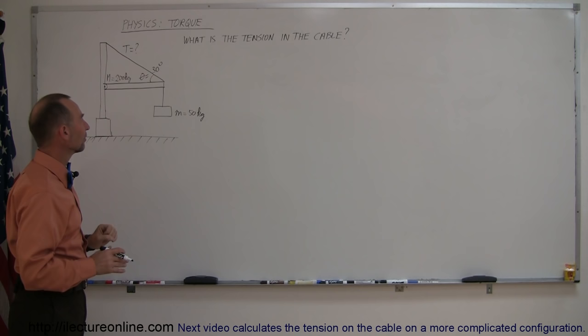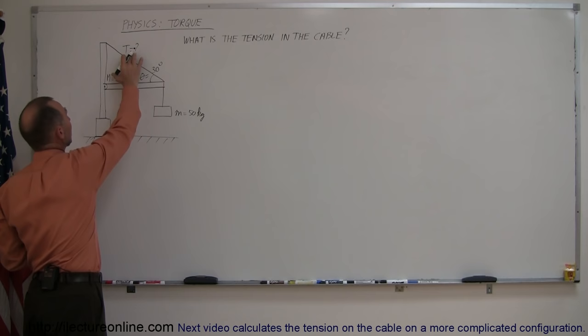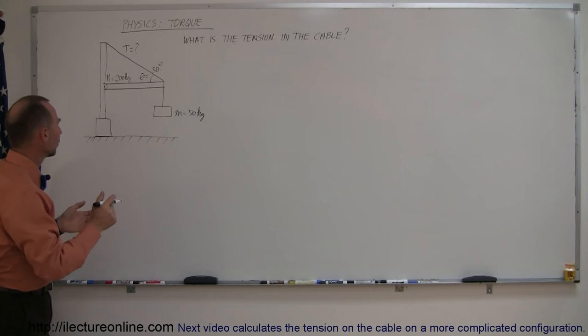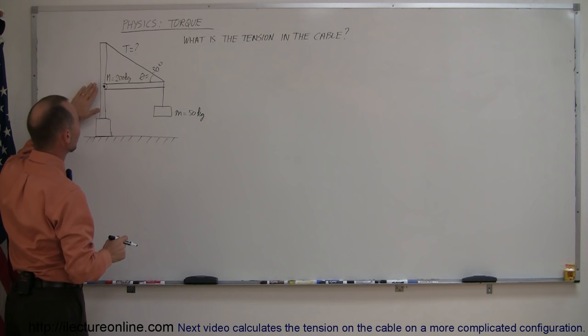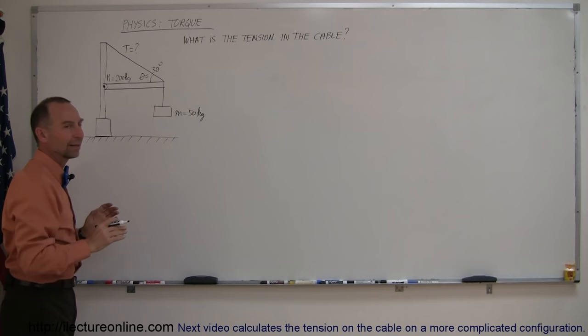The problem asks us to find the tension in the cable. In order to do that, we have to pick a pivot point. I'm going to pick my pivot point right at the beam-pole junction, because I have no idea what the forces are on the beam there, and placing the pivot point right there eliminates any forces going through it as non-material to the problem.